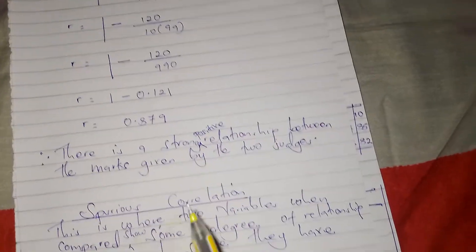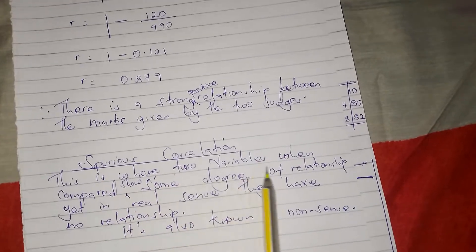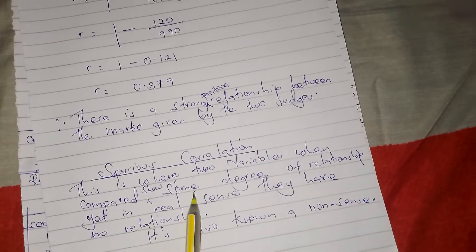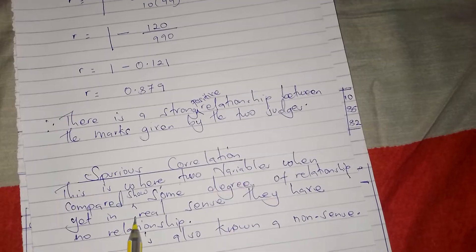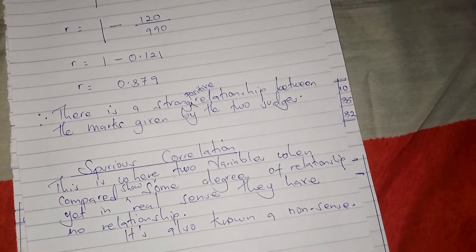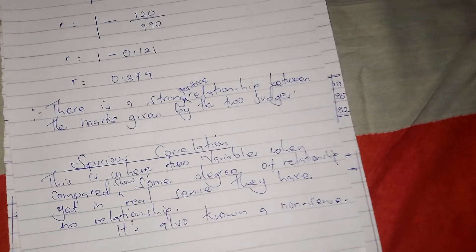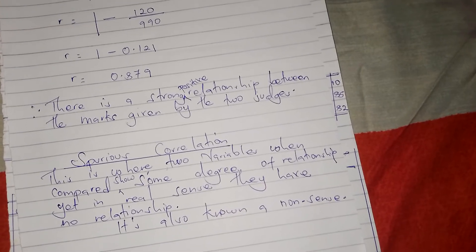The last type is called spurious correlation. This is where two variables when compared show some degree of relationship, yet in real sense they have no relationship. It is also known as a nonsense relationship, where they appear to show a real relationship.